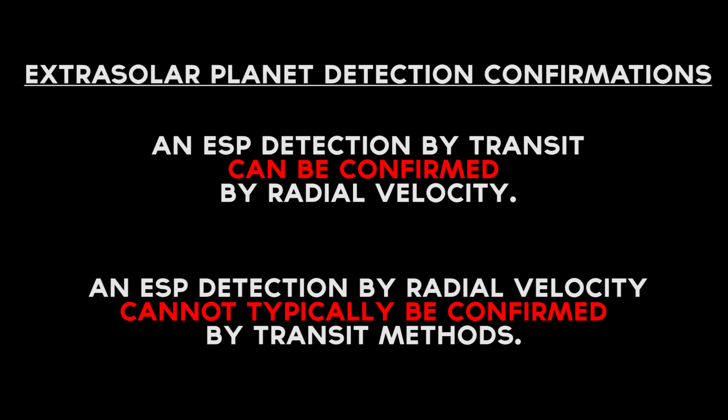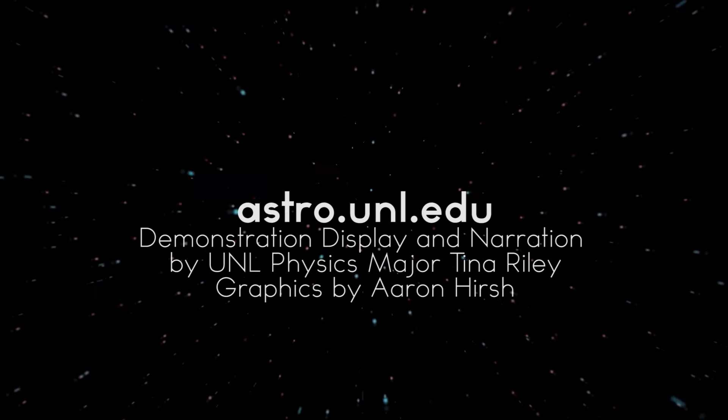So how do the two methods support each other? If you detect a planet by the transit method, you can use radial velocity to confirm it — because although radial velocity works best near ninety degrees, it works well over a large range of inclination values. However, if you detect a planet by radial velocity, you likely cannot use the transit method to confirm it, because transits can only be detected for a very small range of inclinations very near ninety degrees. Many more systems are detectable by radial velocity methods. More teaching materials are available at astro.unl.edu.